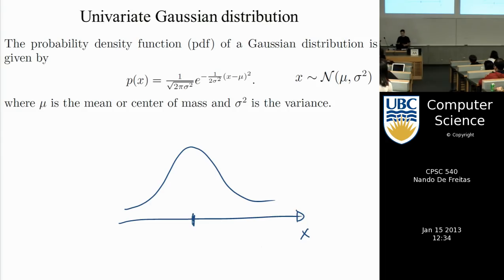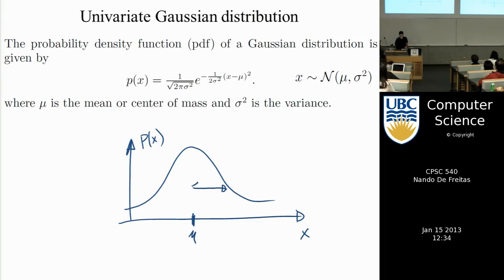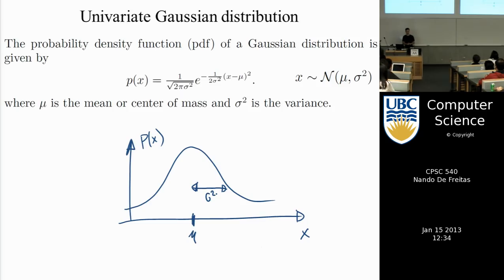The Gaussian distribution is centered at the parameter mu, which in the univariate case is just a scalar. It's a bell curve, and its width is controlled by the parameter sigma — the bigger sigma, the wider it is. Sigma is called the standard deviation; sigma squared is called the variance; mu is called the expected value, or the mean. The area under this curve equals 1 — it's a probability distribution.